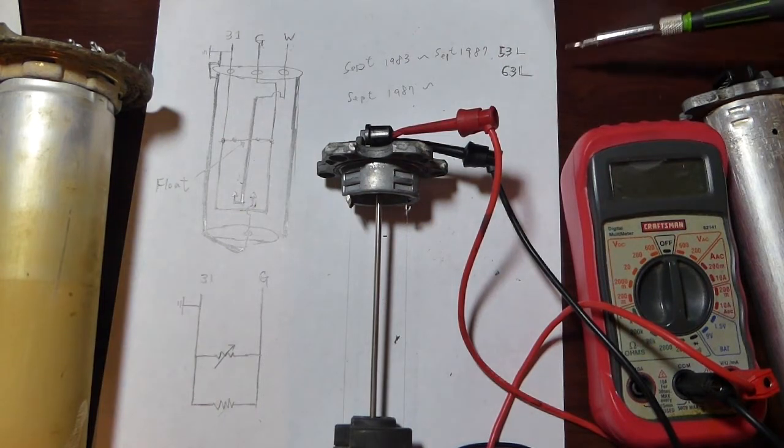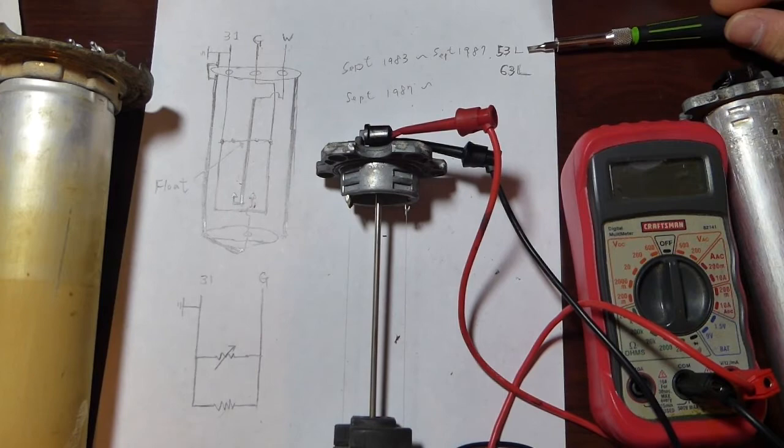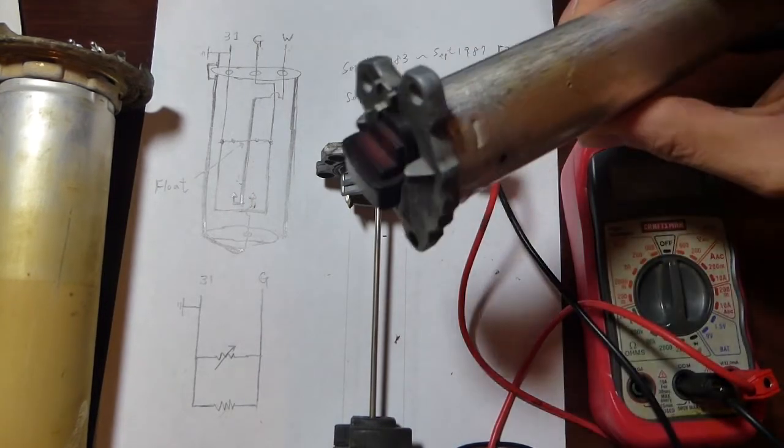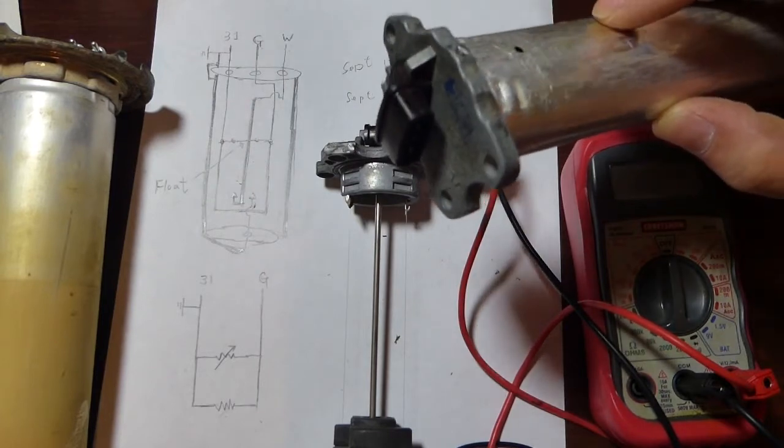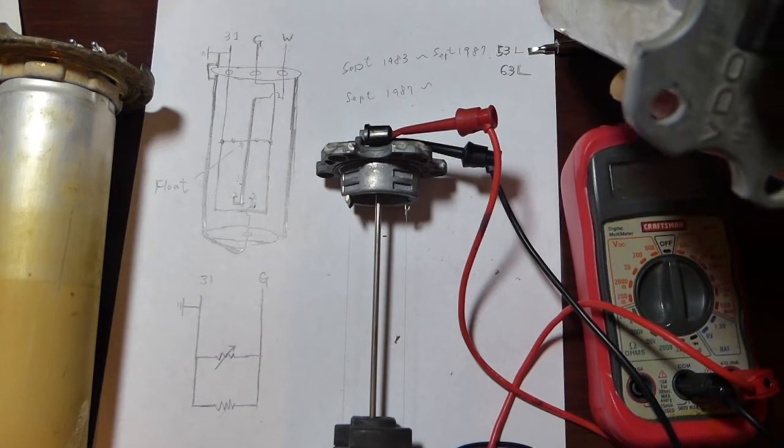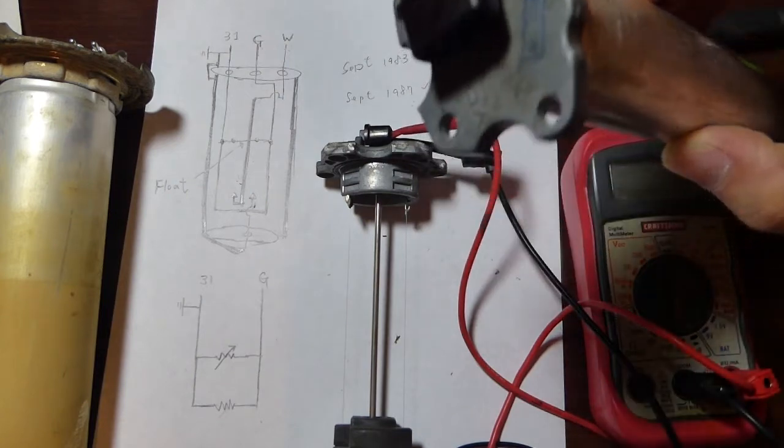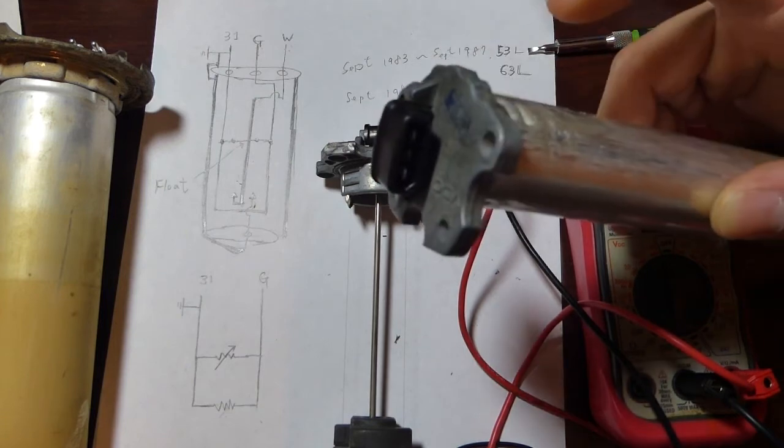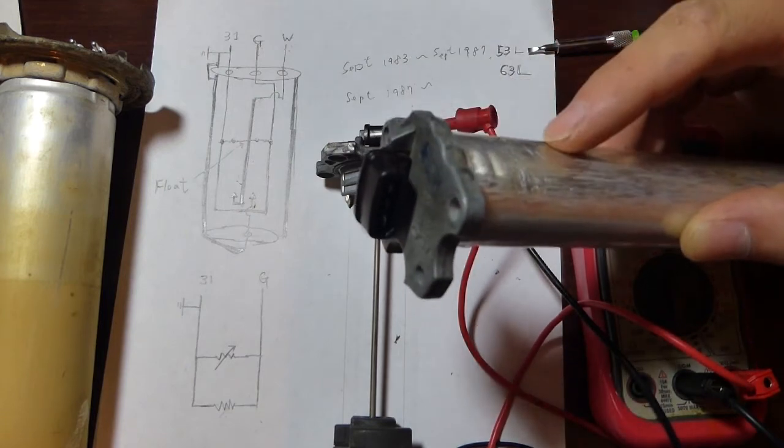If you have a 53 liter tank, you have only one fuel level sending unit like this one. It's basically integrated into the fuel pump assembly. If you have ever pulled out your fuel pump assembly, you know you have to remove this fuel level sending unit first.